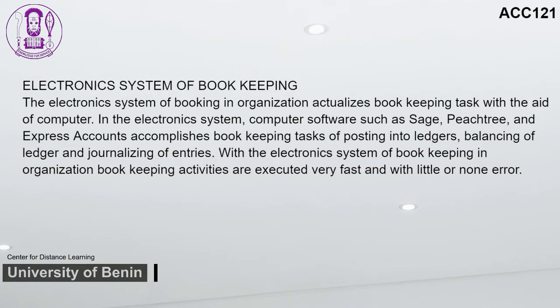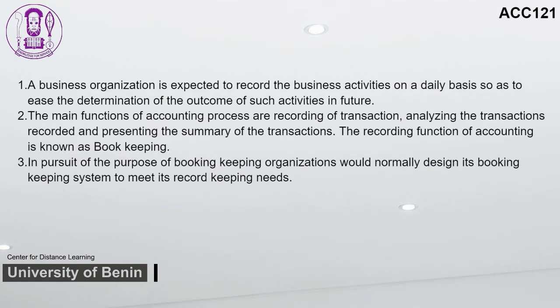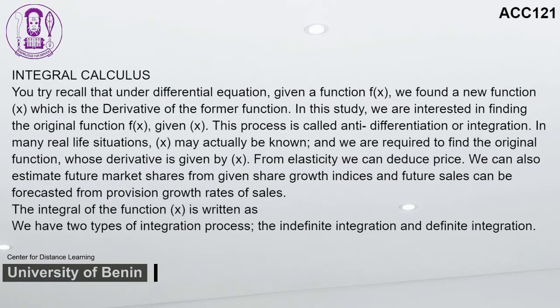Summary for Study Session 2: A business organization is expected to record business activities on a daily basis to ease determination of outcomes in the future. The main functions of accounting are recording transactions, analyzing the transactions recorded, and presenting a summary of the transactions — the recording function is known as bookkeeping. Organizations design their bookkeeping system to meet their record-keeping needs. The manual system uses pen, ink, paper, and human mental exertion, suitable for low transaction volumes. Mechanized bookkeeping uses machines for posting, balancing ledgers, writing the cash book, and journalizing data.